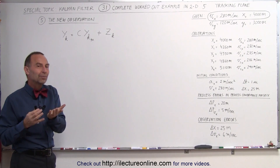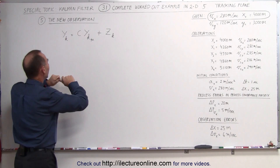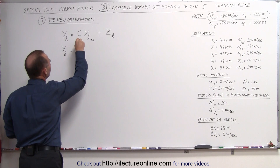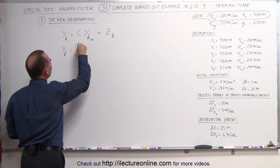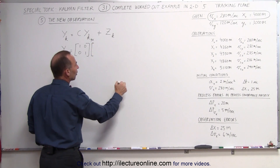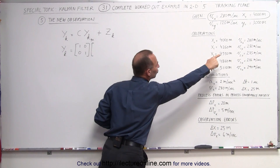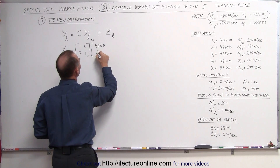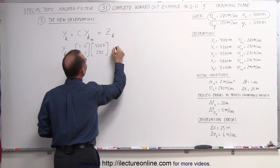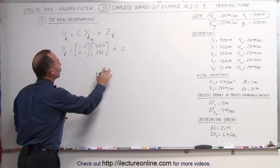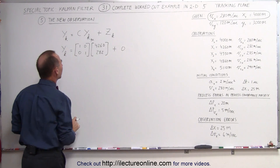In this case, we're going to keep things simple and call this zero. So the new observed matrix is going to be equal to the C matrix — which in this case will be the identity matrix, because we don't have to transform it at all — multiplied by the observation matrix. We're going to have position 4,260 and velocity 282, plus zero, because we're calling the error in the observation mechanism zero for now.